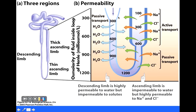The filtrate initially produced in the renal corpuscle has about the same concentration of solutes as blood — about 300 milliosmoles. As the filtrate makes its way down the descending limb, it encounters surrounding tissue with a higher and higher concentration of solutes. Since the descending limb is permeable to water, water moves out by osmosis, and the filtrate becomes more and more concentrated as it makes its way down.